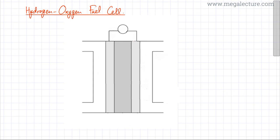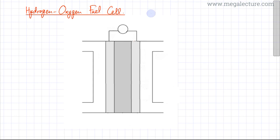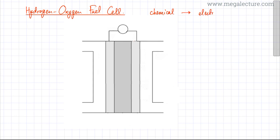In this video lecture we're going to discuss the very basic idea of a hydrogen-oxygen fuel cell. A hydrogen-oxygen fuel cell, or any cell for that matter, is a device that converts chemical energy to electrical energy. Its basic purpose is to produce electricity which could be used to do work.